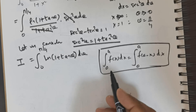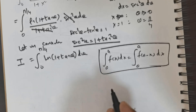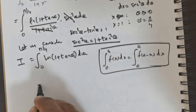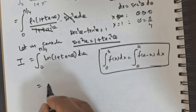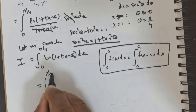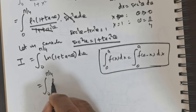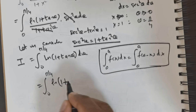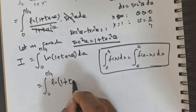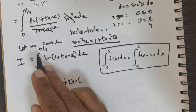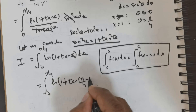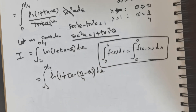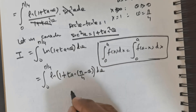So by applying this property, we can rewrite I as the integral from 0 to π/4 of ln(1 + tan(π/4 − θ)) dθ.